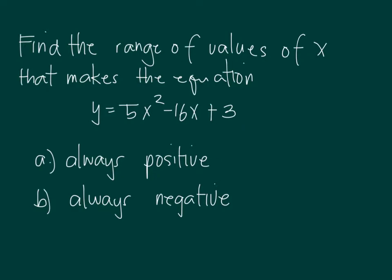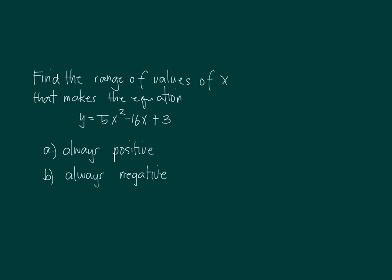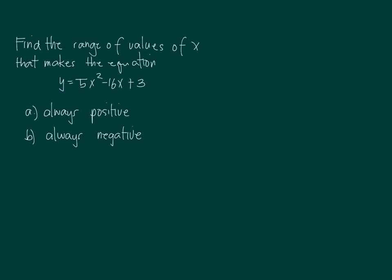Let's start with the first problem. We want to find the range of values of x that will make it always positive. So for A, all we need to do is to solve when is 5x squared minus 16x plus 3 greater than 0, because greater than 0 means always positive. Just apply the ideas in solving inequalities.